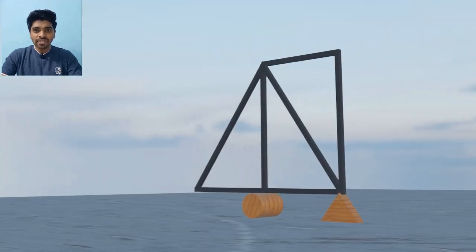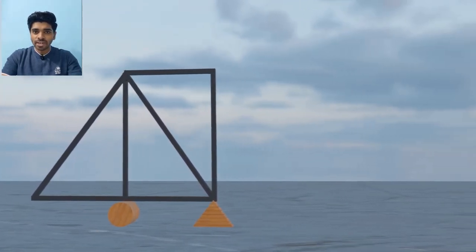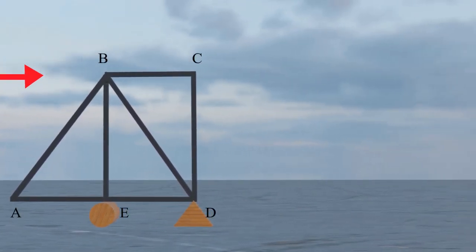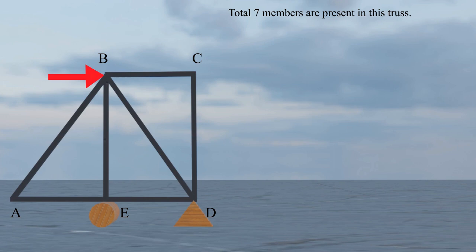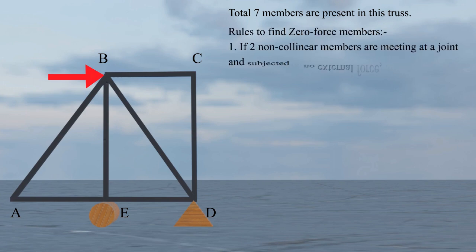Let us understand this with a simple example. Here we have a truss structure at which we have applied a horizontal force P at joint B. If you want to analyze this structure with the method of joint, we have to find all the member forces. There are total seven member forces, so it is very time-consuming. But what if you already know some of the member forces by following simple rules? Here we have two simple rules to find the zero force members.